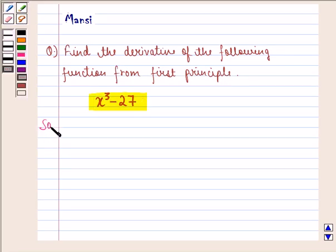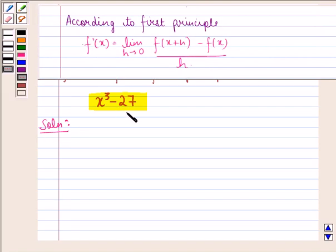So let us start with the solution to this question. Let us see what is the first principle. According to first principle, f dash x is equal to limit h approaching 0, function at x plus h minus function at x divided by h.